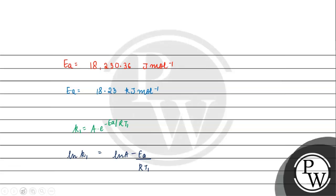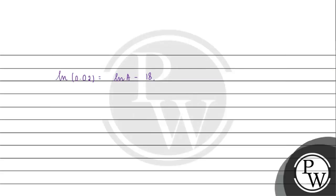K1 value is 0.02, ln A minus Ea value is 18,230.36 joule per mole. In denominator R is 8.314 joule per kelvin per mole, multiplied by T1 temperature, which is 500 kelvin. Joule per mole and kelvin cancel out.